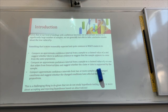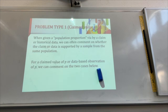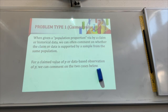The course doesn't have hypothesis testing. We did some hypothesis testing — chi-square — in one of the investigations last year, but it's not actually in the course. It's a challenge to come to a firm conclusion unless you've done hypothesis testing. So the problem type one is the claimed value of P.